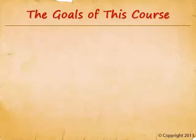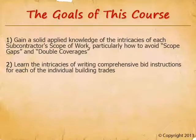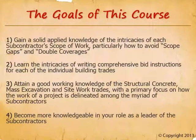There are many goals to this course, but a few of the more important ones include: gaining a solid applied knowledge of the intricacies of each subcontractor's scope of work, particularly how to avoid scope gaps and double coverages; learning how to write comprehensive bid instructions for each of the individual building trades; attaining a good working knowledge of the structural concrete, mass excavation, and site work trades, with a primary focus on how the work of a project is delineated among the myriad of subcontractors; and becoming much more knowledgeable in your role as a leader of the subcontractors.